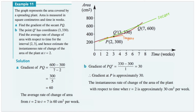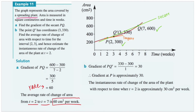Question 11: the graph represents the area covered by a spreading plant. Area is measured in square centimetres and time in weeks. Some plants, when they grow, take up more space — so we're measuring area and time. Part A says: find the gradient of the secant PQ. We know the coordinates of P and Q, so if we draw a green line through these two points, we can plug them into the rise over run formula. The gradient is 60, representing the average rate of change of area from week 2 to week 7 — the plant is growing at this rate during that time.